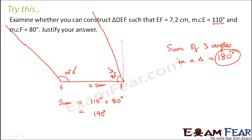So that means we could not draw a triangle with this measurement because the measurement of the angles which are given in the problem, they are incorrect.